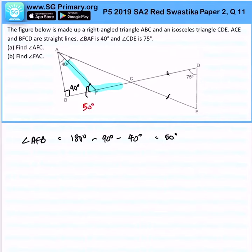This is 50 degrees, and this allows us to find angle AFC, which is 180 minus 50, equals to 130 degrees. Overall, this will be 130 degrees. So far so good.